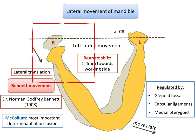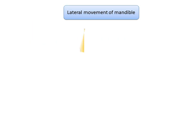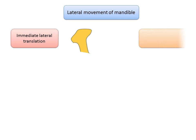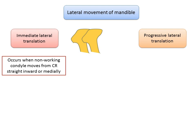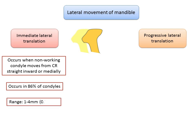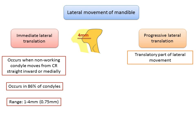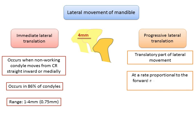Based on the timing of the shift in relation to the forward movement of the non-working condyle, Bennett's side shift has two components: immediate lateral translation and progressive lateral translation. Immediate lateral translation occurs when the non-working condyle moves from centric relation straight inward or medially. This movement occurs in 86% of condyles studied, with values ranging from 1 to 4 mm and an average of 0.75 mm. Progressive lateral translation is the translatory portion proportional to the forward movement of the non-working condyle, ranging from 2 to 3 mm.